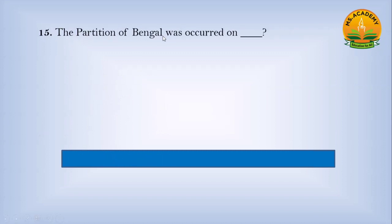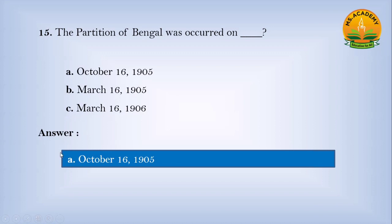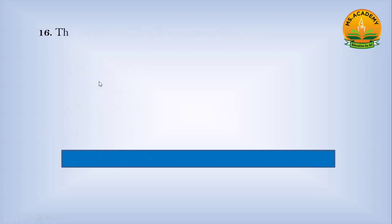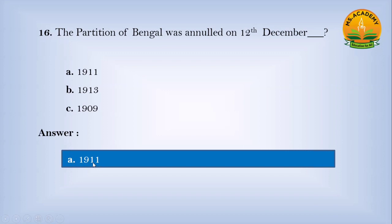The Partition of Bengal occurred on: Option A, October 16, 1905; Option B, March 16, 1905; Option C, March 16, 1906. Answer: A — 16 October 1905. The Partition of Bengal was annulled on 12th December: Option A, 1911; Option B, 1913; Option C, 1909. Answer: A — 1911.